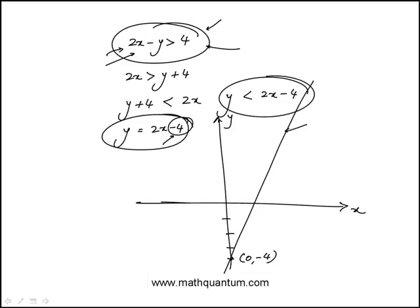Now this line is going to divide this plane into two regions. One where it would be y is less than 2x minus 4 and the other one would be y is greater than 2x minus 4.